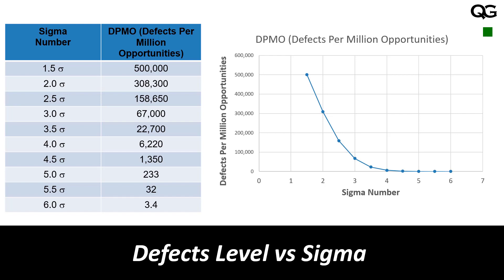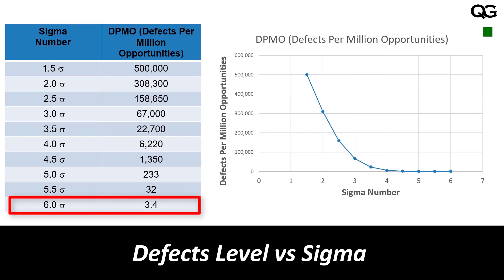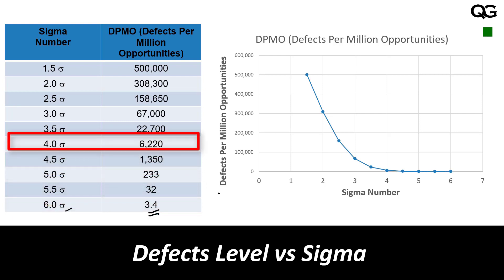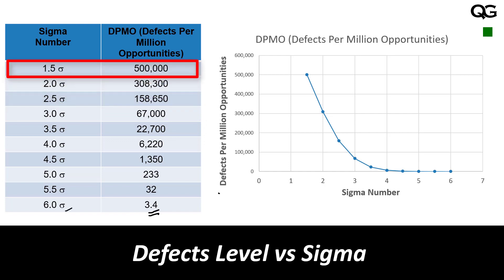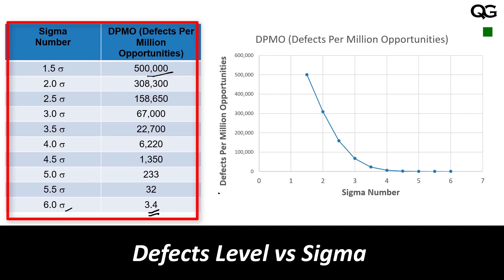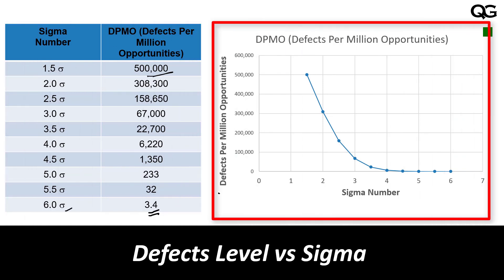When using Six Sigma as a statistical tool, 3.4 defects per million opportunities means you are achieving Six Sigma performance. As your defects per million opportunities go up, your sigma level keeps reducing. When you have 500,000 defects per million opportunities — meaning half of your items are being rejected — you are at 1.5 sigma. This table gives you the correlation between sigma level and defect level, and the graph on the right shows that as sigma level goes up, defect level goes down.